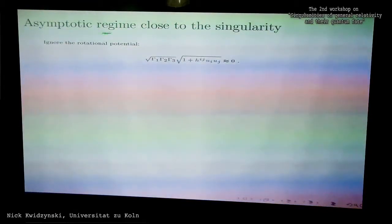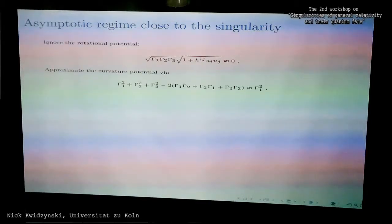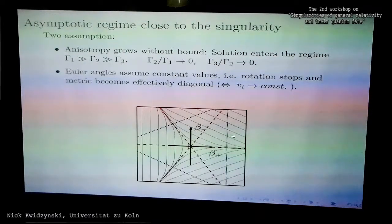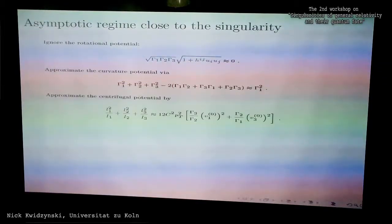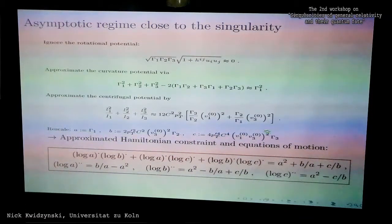Now I carry out the approximations which BKL already carried out. I ignore the rotational potential—I have argued before why this is a reasonable assumption. Then I approximate the curvature potential using this assumption. This drastically simplifies this potential—we basically just keep this potential wall here. I also approximate the centrifugal potential, which then takes this form. To bring equations of motion and Hamiltonian constraint into some simpler form, we rescale, and then we arrive at this simplified dynamics close to the singularity.